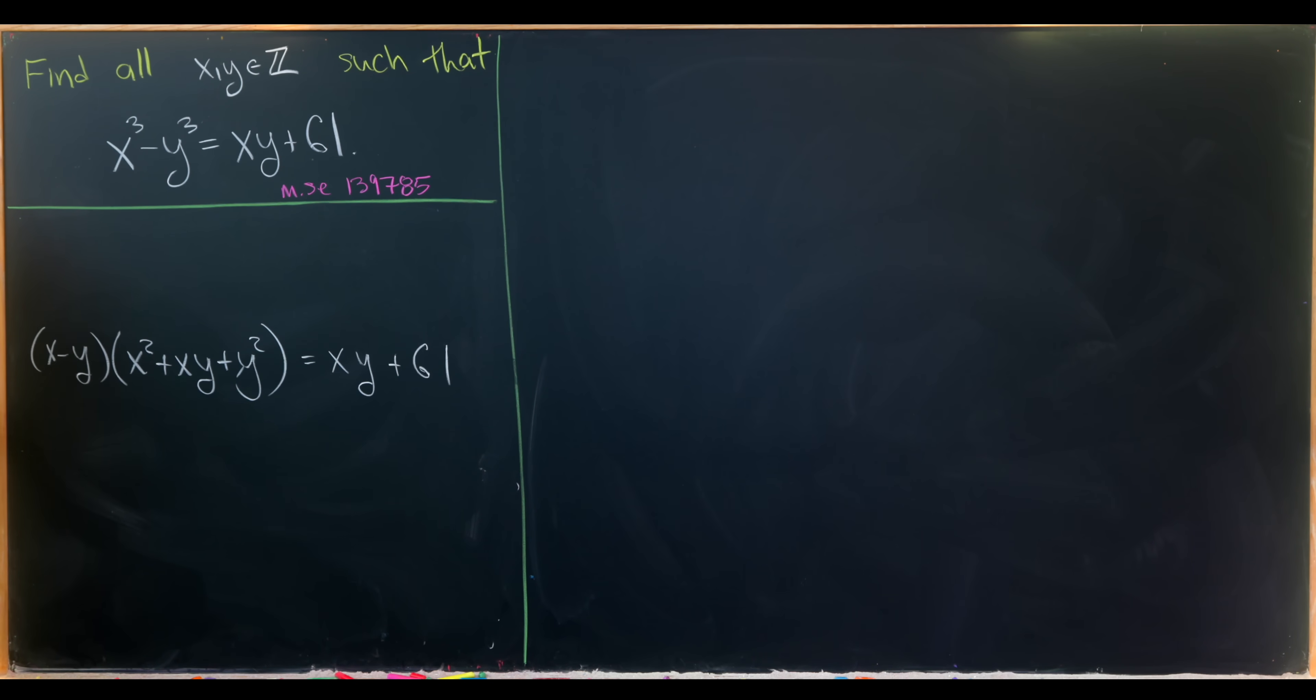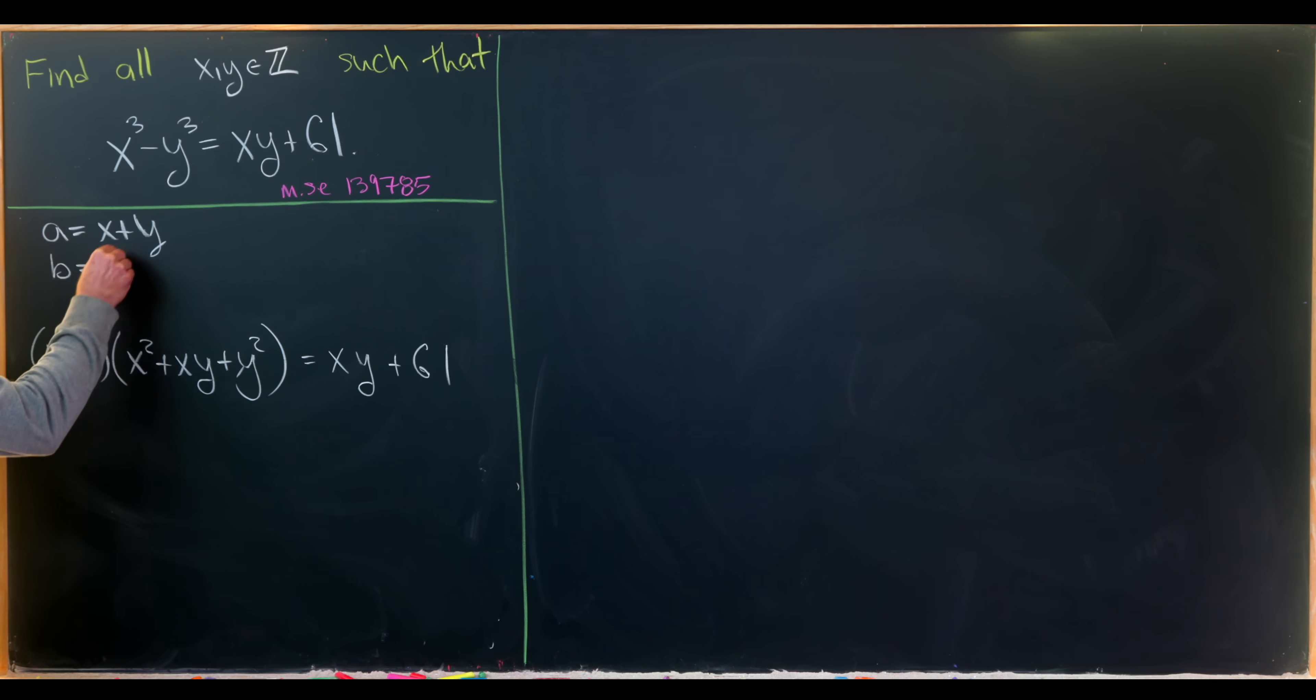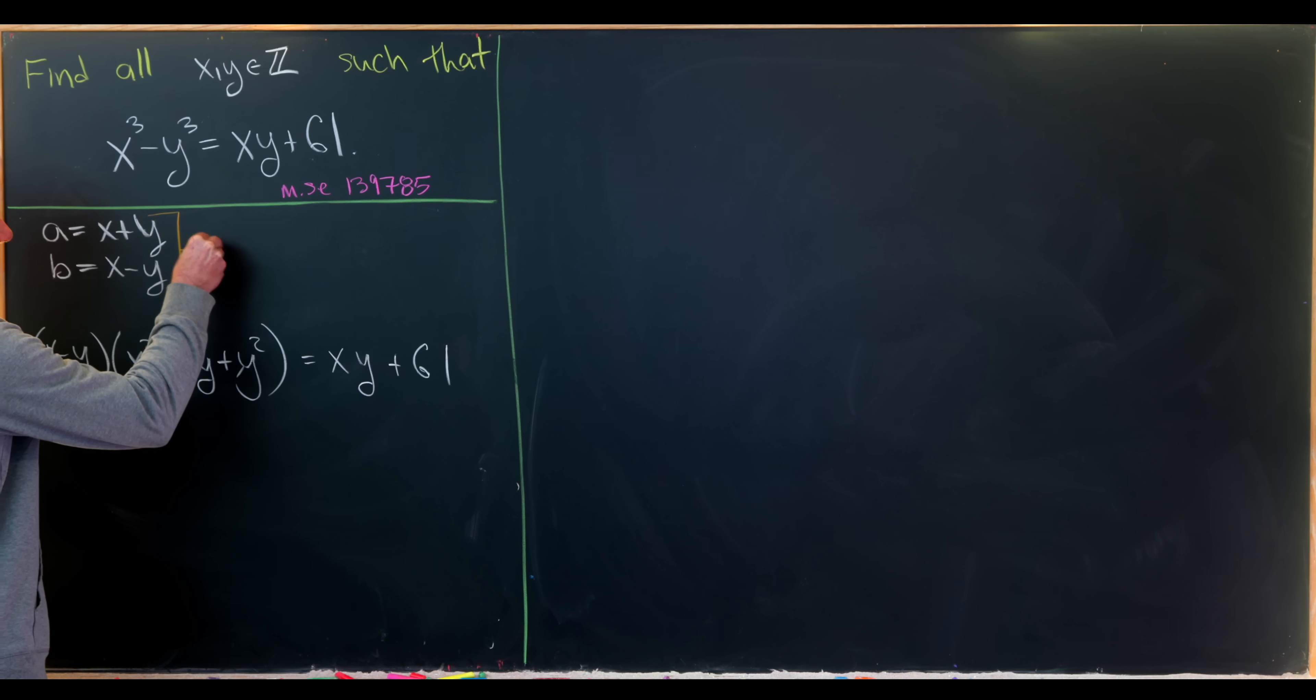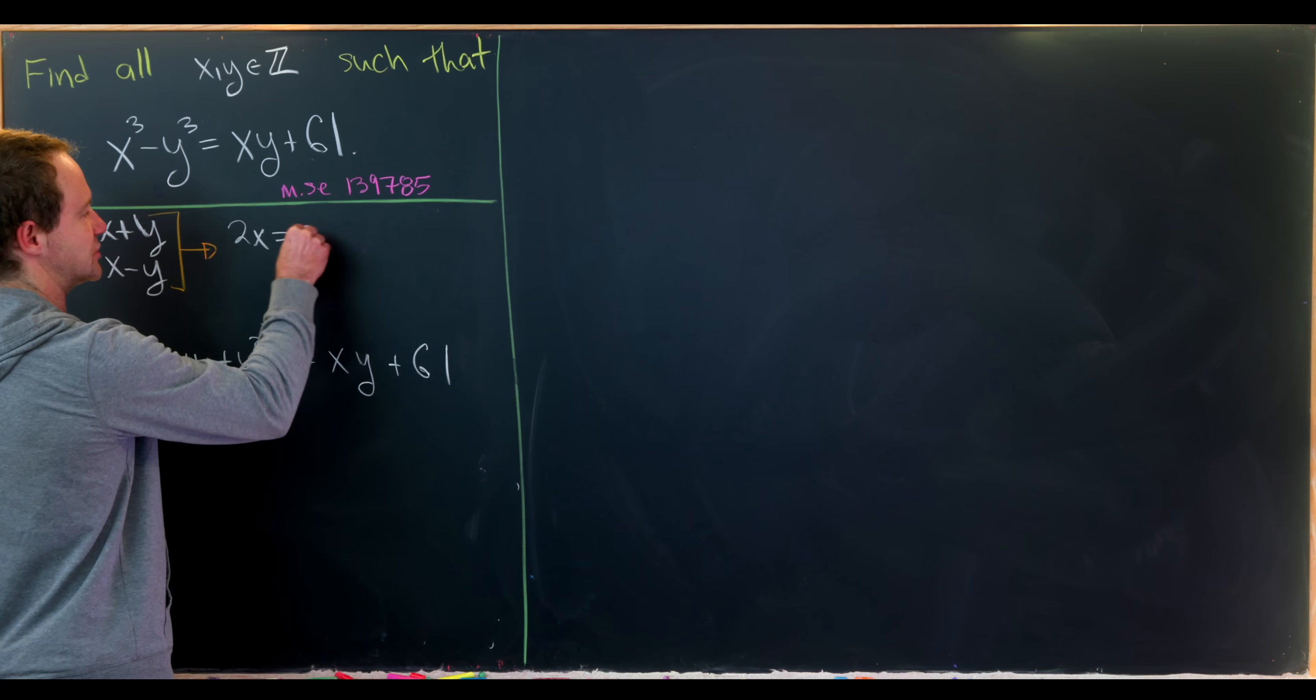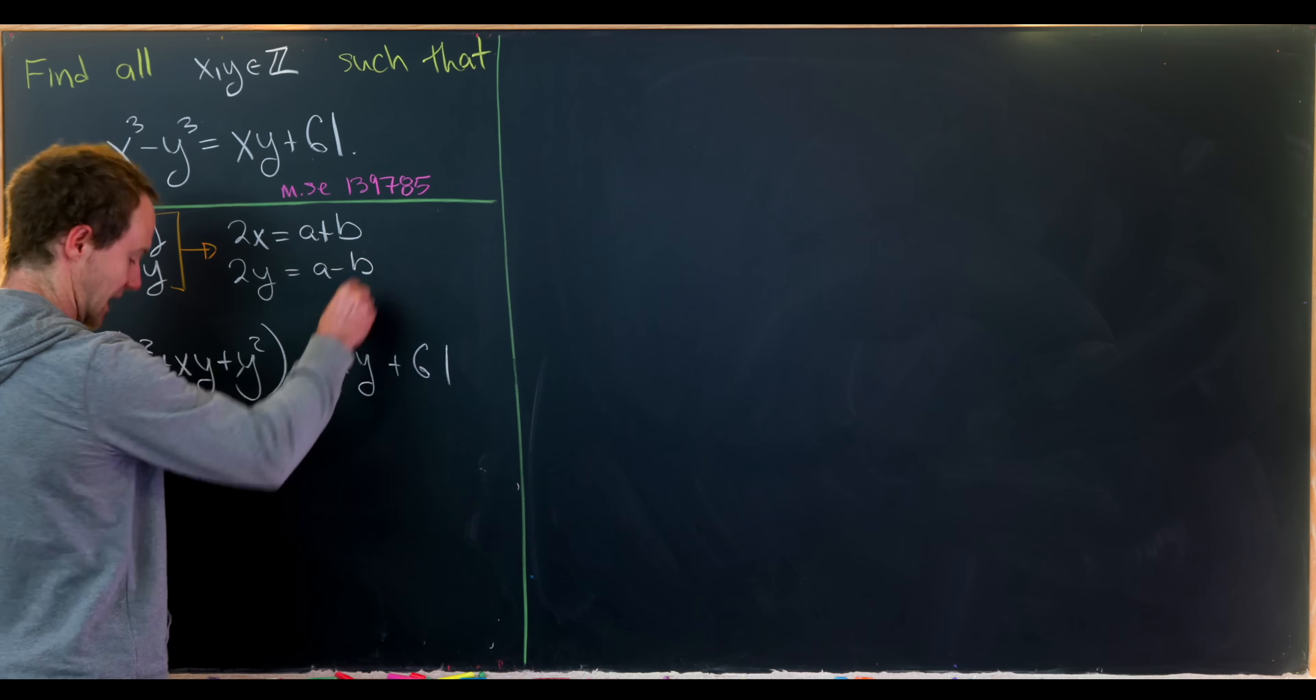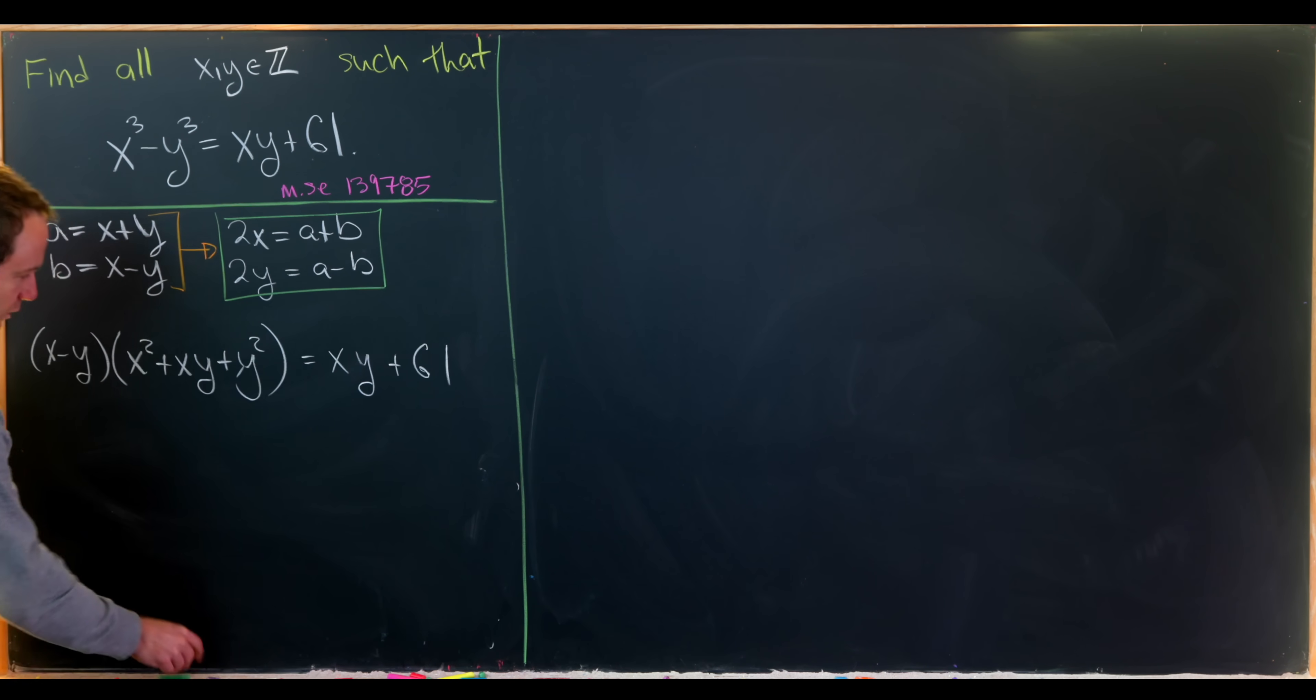Looking at this motivates a change of variables. Perhaps we could write a as x plus y and b as x minus y. Check it out, we've got the b right there. But what does that mean x and y are in terms of a and b? Well, adding these two equations we'll see that 2x equals a plus b and 2y equals a minus b. So that's our translation back to x's and y's.